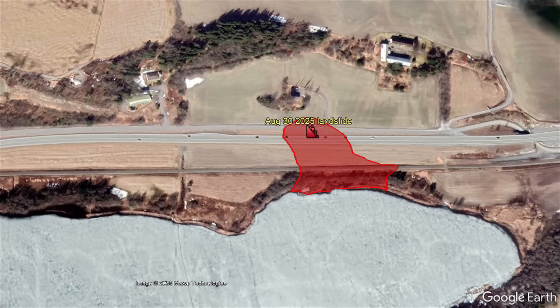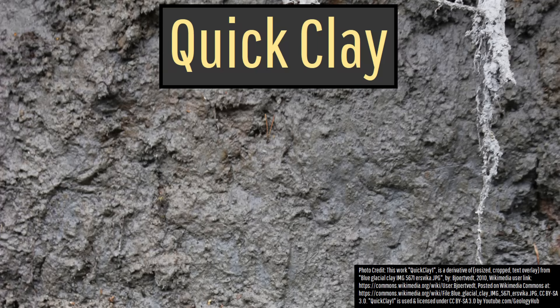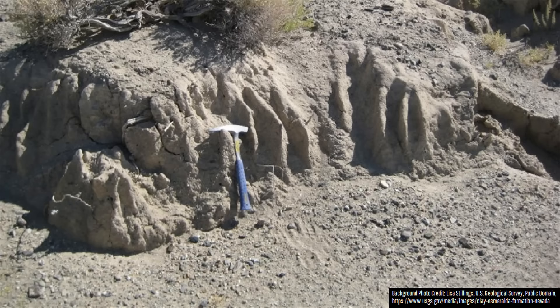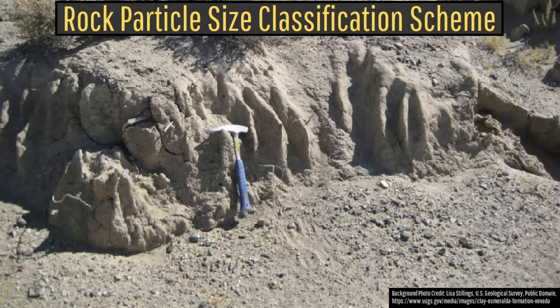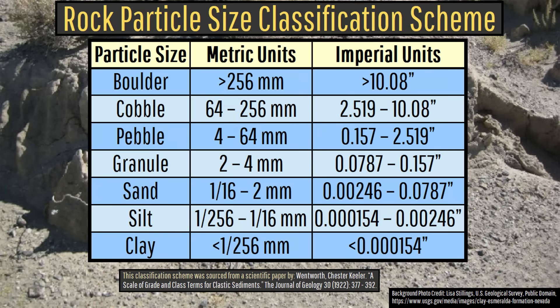The reason I am highlighting this particular landslide is it involved a type of material I have not discussed before on this channel: so-called quick clay. For reference, clay describes material with an average particle size of less than 1/256th of a millimeter, or 1/54 millionth of an inch. But quick clay is no ordinary clay.